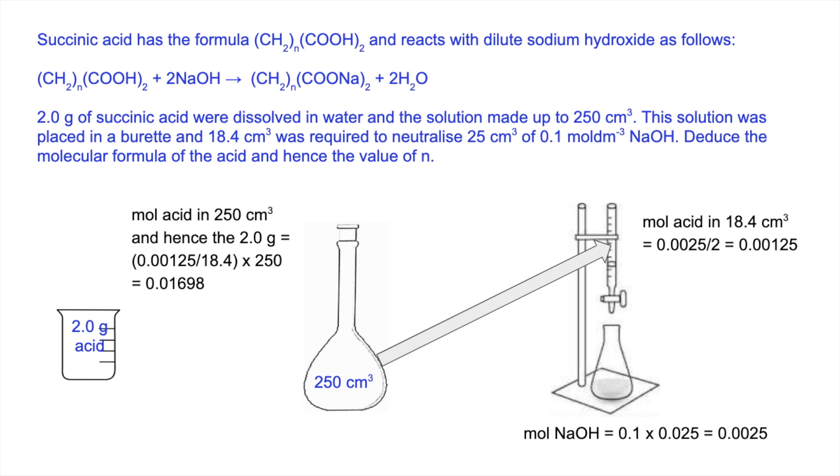The moles of acid in 250 and also the 2 grams—remember it's dissolved in here and then just poured into there—that's 0.00125 divided by 18.4 times 250: 0.01698. So now we know the moles and we know the mass was 2 grams. The MR of succinic acid is 117.76.